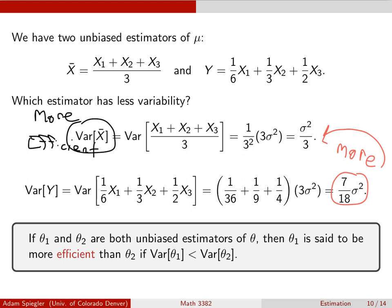So if we're comparing two unbiased estimators, just looking at the bias isn't enough. The property of efficiency says: if we have two unbiased estimators, one is more efficient than the other if its variance is less. Another property we can compare is the variability of those two estimates, and it makes sense to pick the estimator with less variability as the better one.